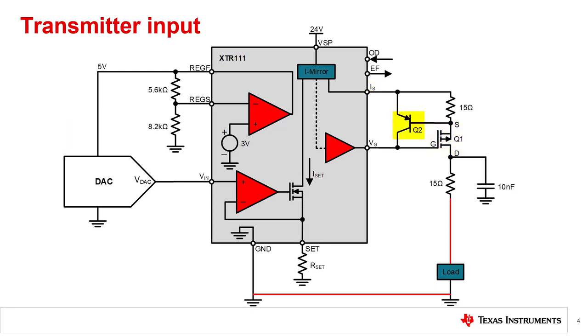The additional PNP transistor Q2 provides the current limit protection for the XTR111. The two transmission wires, shown here in red, connect the transmitter output to the load, and the load's ground to the transmitter's ground. The third wire in this 3-wire current transmitter connects the local supply to the device.